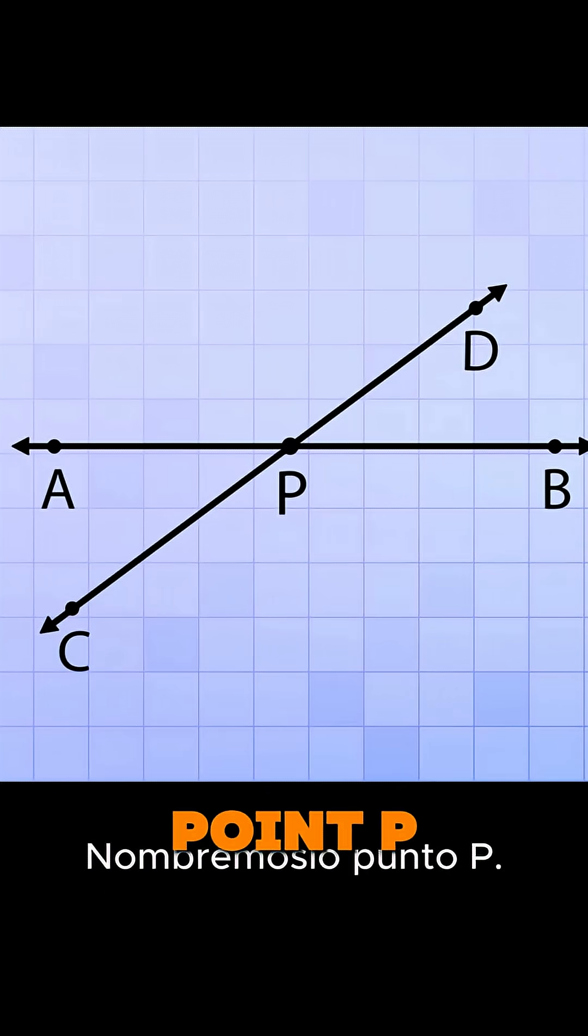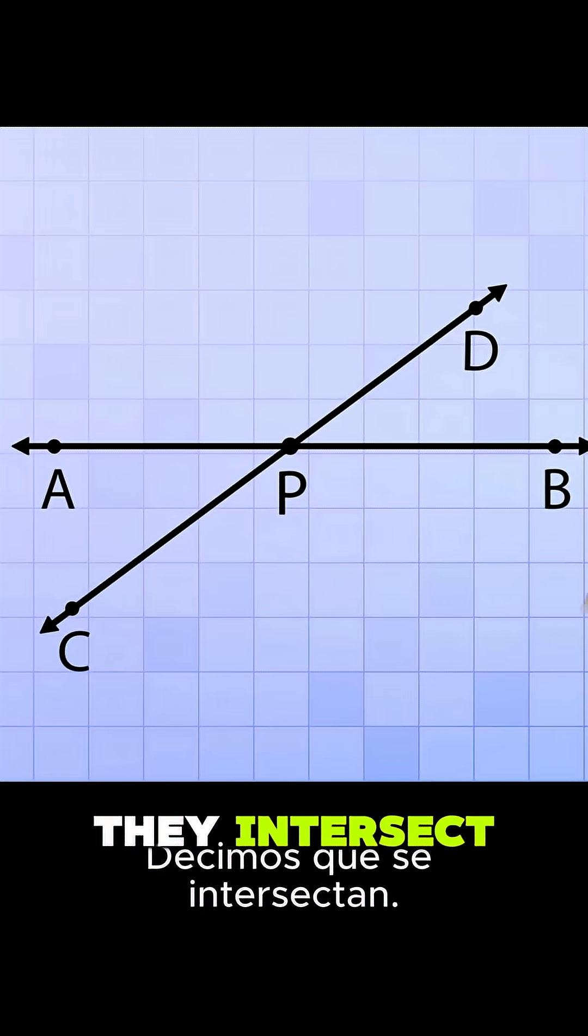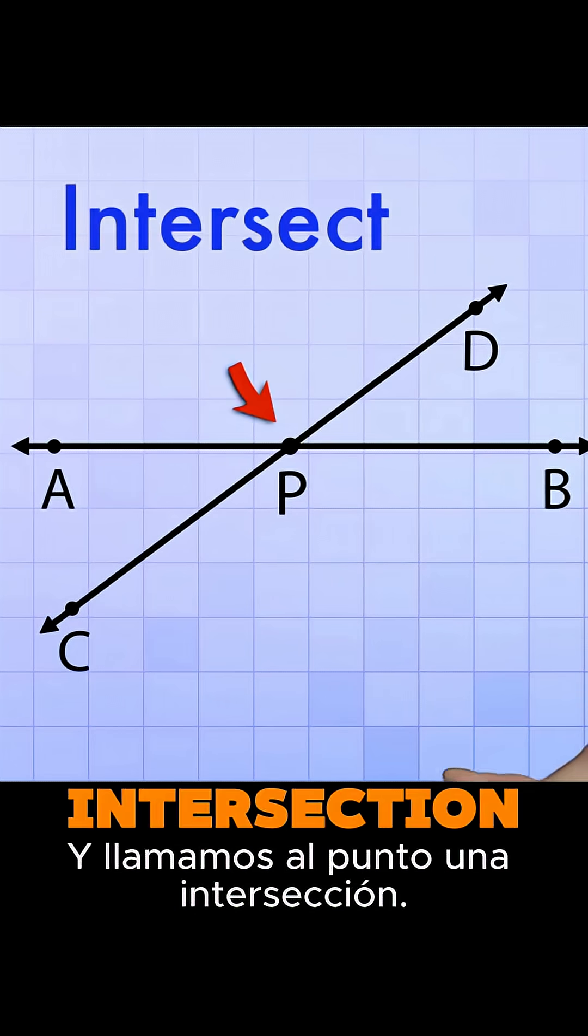Let's name it Point P. When lines cross at a point like this, we say that they intersect and we call the point an intersection.